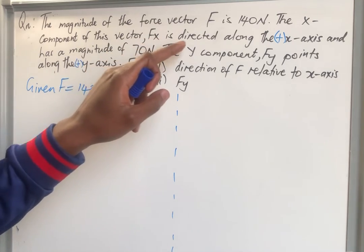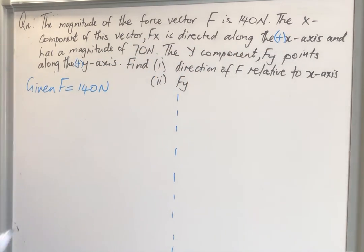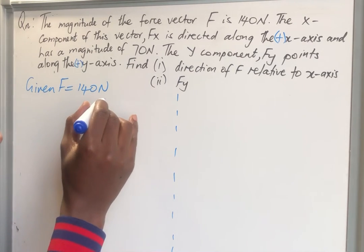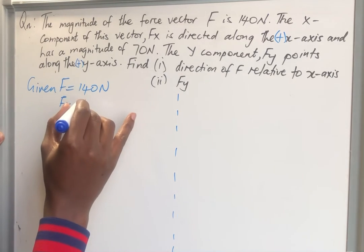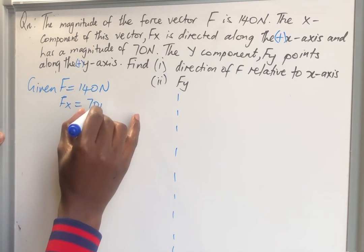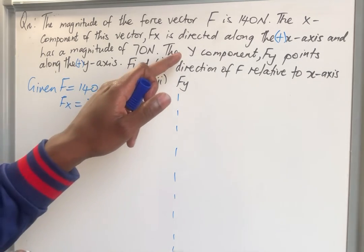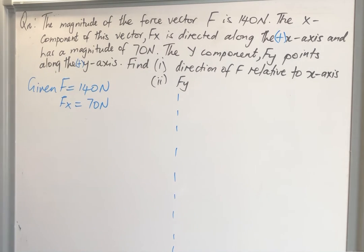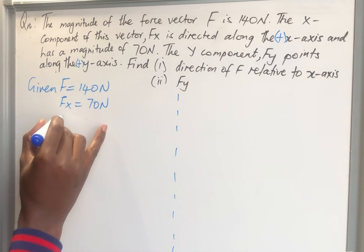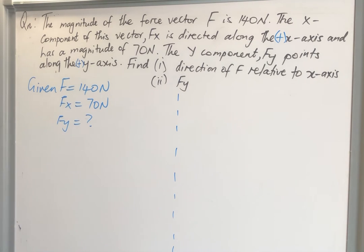So Fx, which is going in the positive direction, is given by 70 newtons. They went on and said the y-component, Fy, points along the positive y direction. So you are expecting to have your Fy that we do not know, but it is said to point along the y-axis.